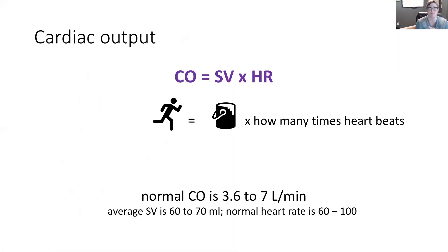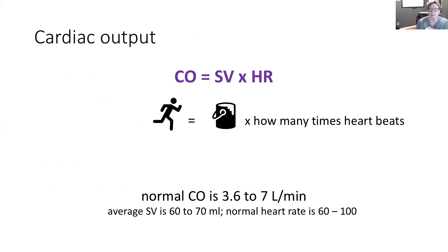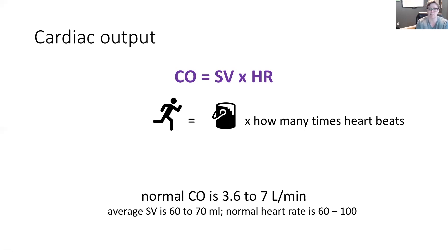When it comes to cardiac output, this is going to be impacting every other arrhythmia. Cardiac output is stroke volume times heart rate. Stroke volume is the amount of blood pumped out of the heart with every beat, and heart rate is how many times the heart beats per minute. Normal cardiac output is 3.6 to 7 liters per minute. We use average stroke volume of 60–70 mL in calculations to find cardiac output for a patient.